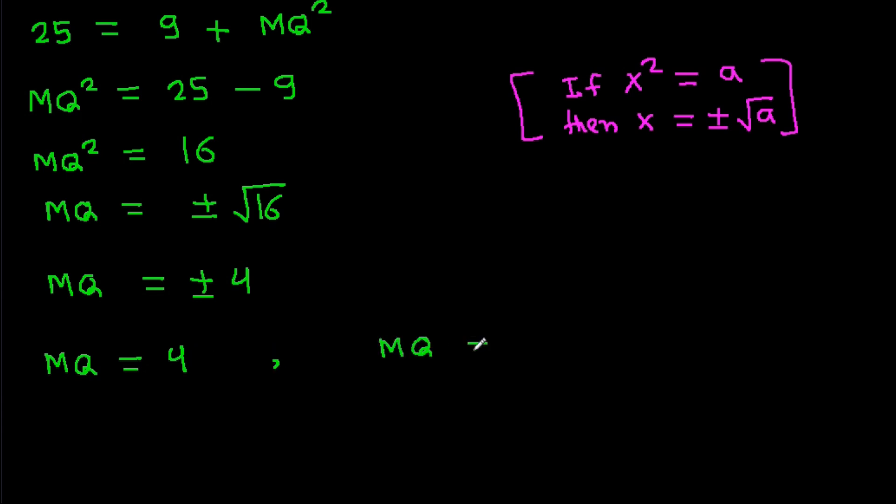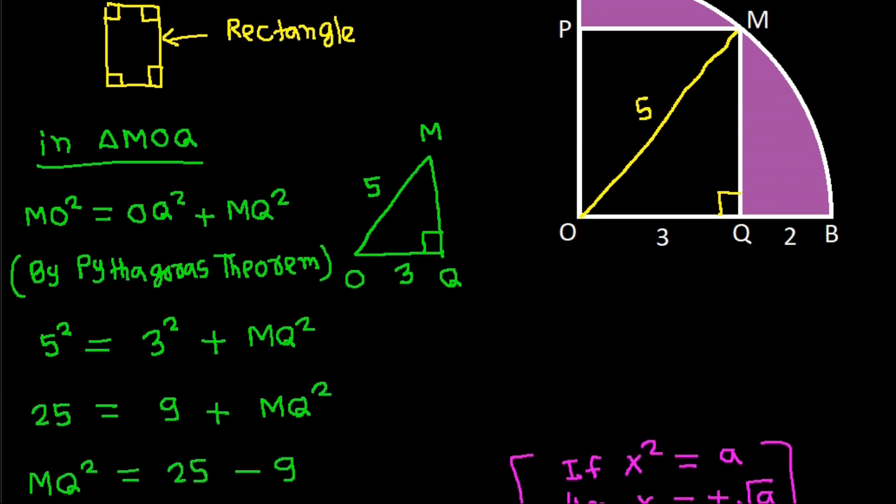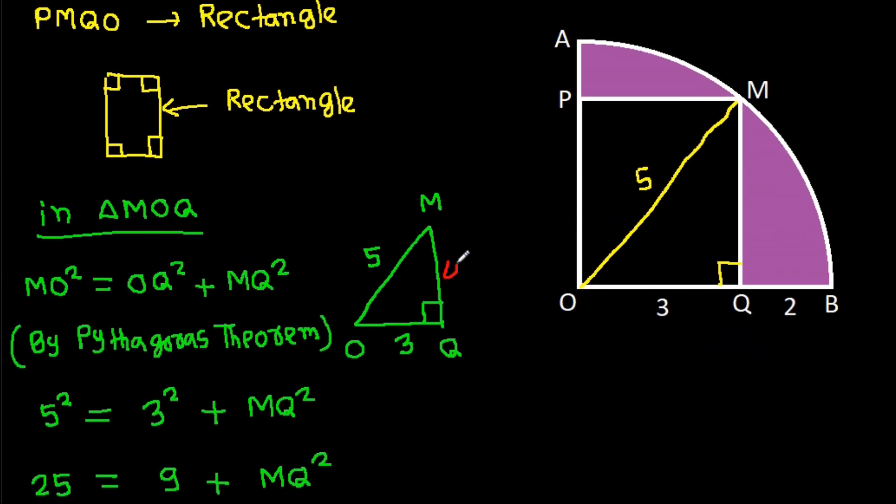But MQ is a length, which should be positive. Minus 4 is negative, so it's not possible. Therefore, MQ equals 4.